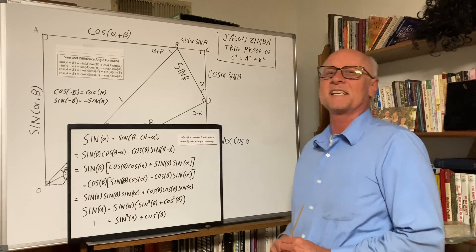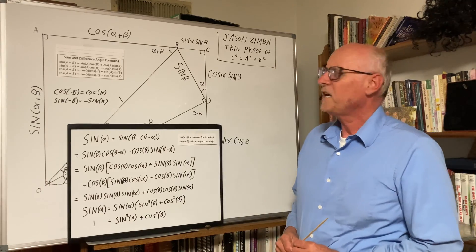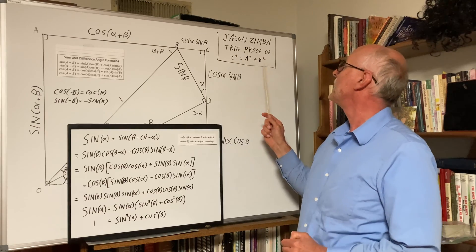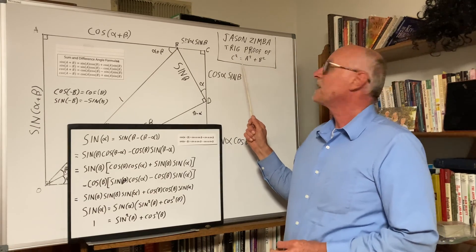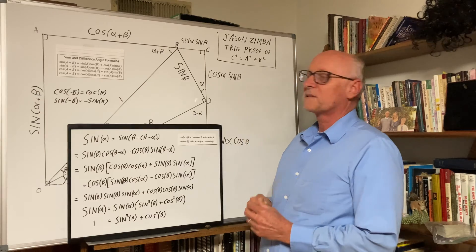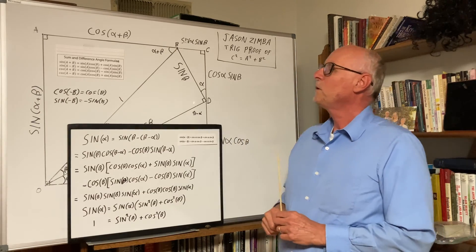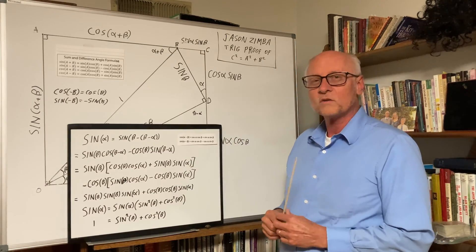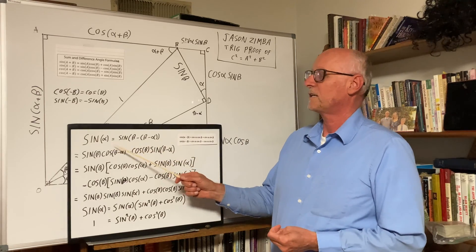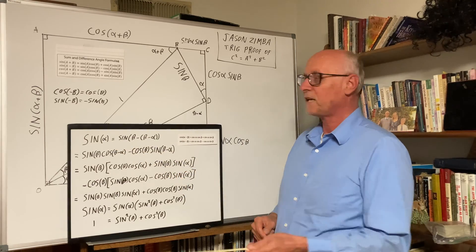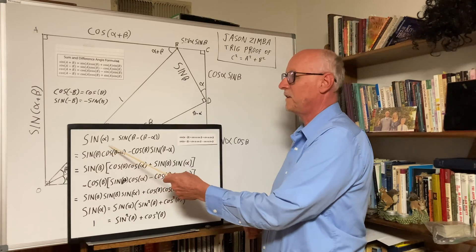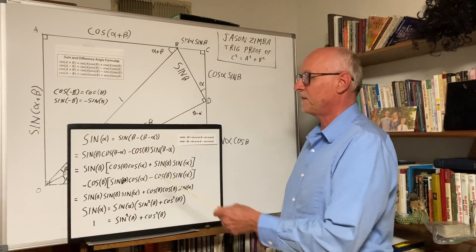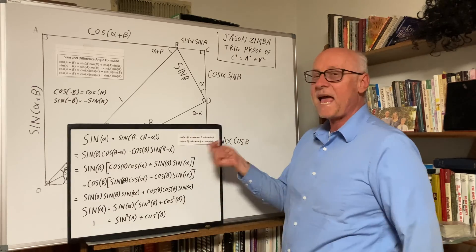Welcome, quadrature fans. Today we will continue with our Jason Zimba proof of Pythagoras' theorem, c squared equals a squared plus b squared, and we will do so using the cosine function as the basis. Previously we used the sine function, and now we will use the cosine function.